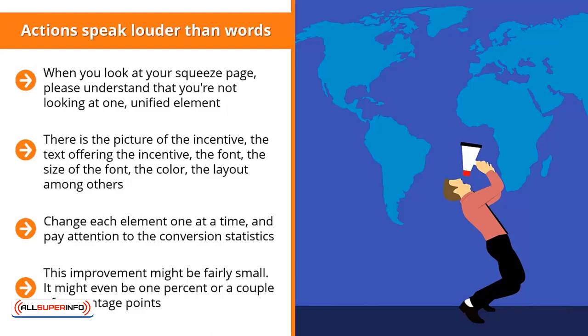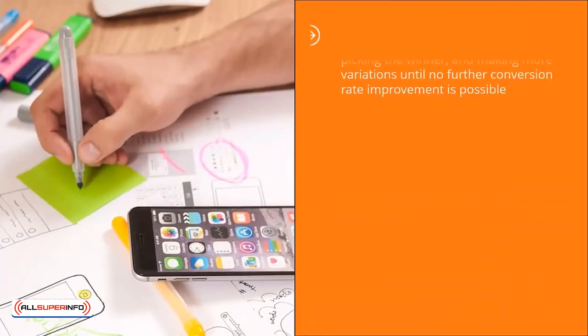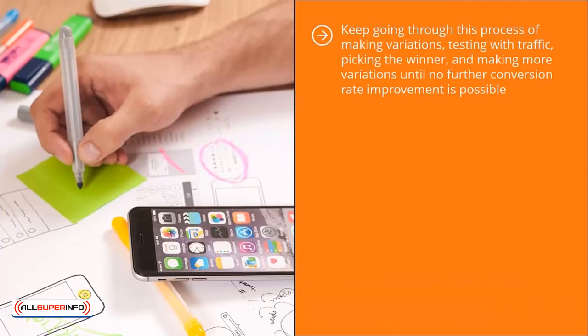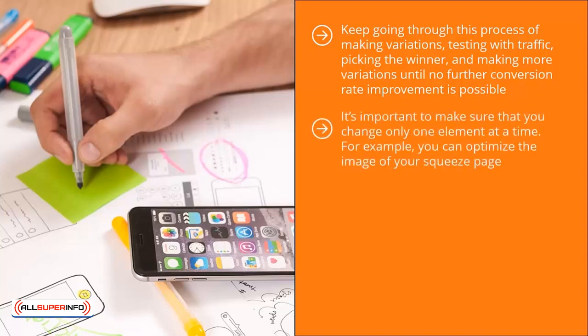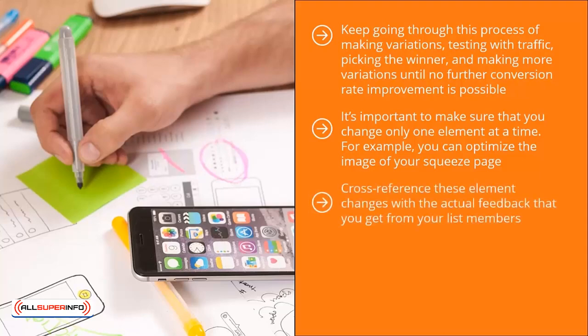Isolate the winning variation and make more variations of it. Run traffic through all the variations and see if you can improve your conversion rate further. Keep going through this process — making variations, testing with traffic, picking the winner, and making more variations — until no further conversion rate improvement is possible. At that point, move on to optimizing another element on your squeeze page. Change only one element at a time: for example, optimize the image first, and once it can't improve further, start changing the text.